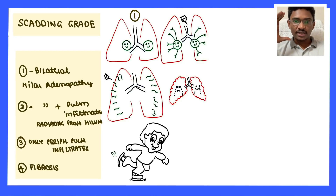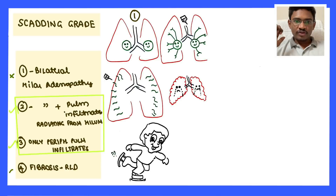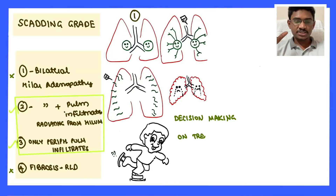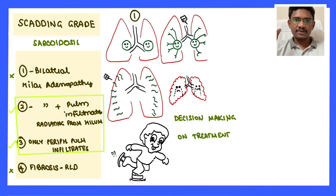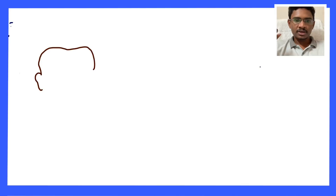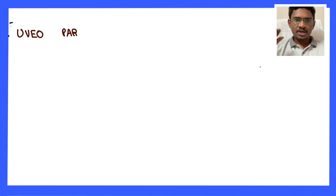This staging system is very important for treatment decisions. Stage one requires no treatment because 50% of sarcoidosis cases recover spontaneously. Stages two and three require treatment with steroids. Stage four has no role for steroids as it is the end stage — the only treatment option is lung transplant.